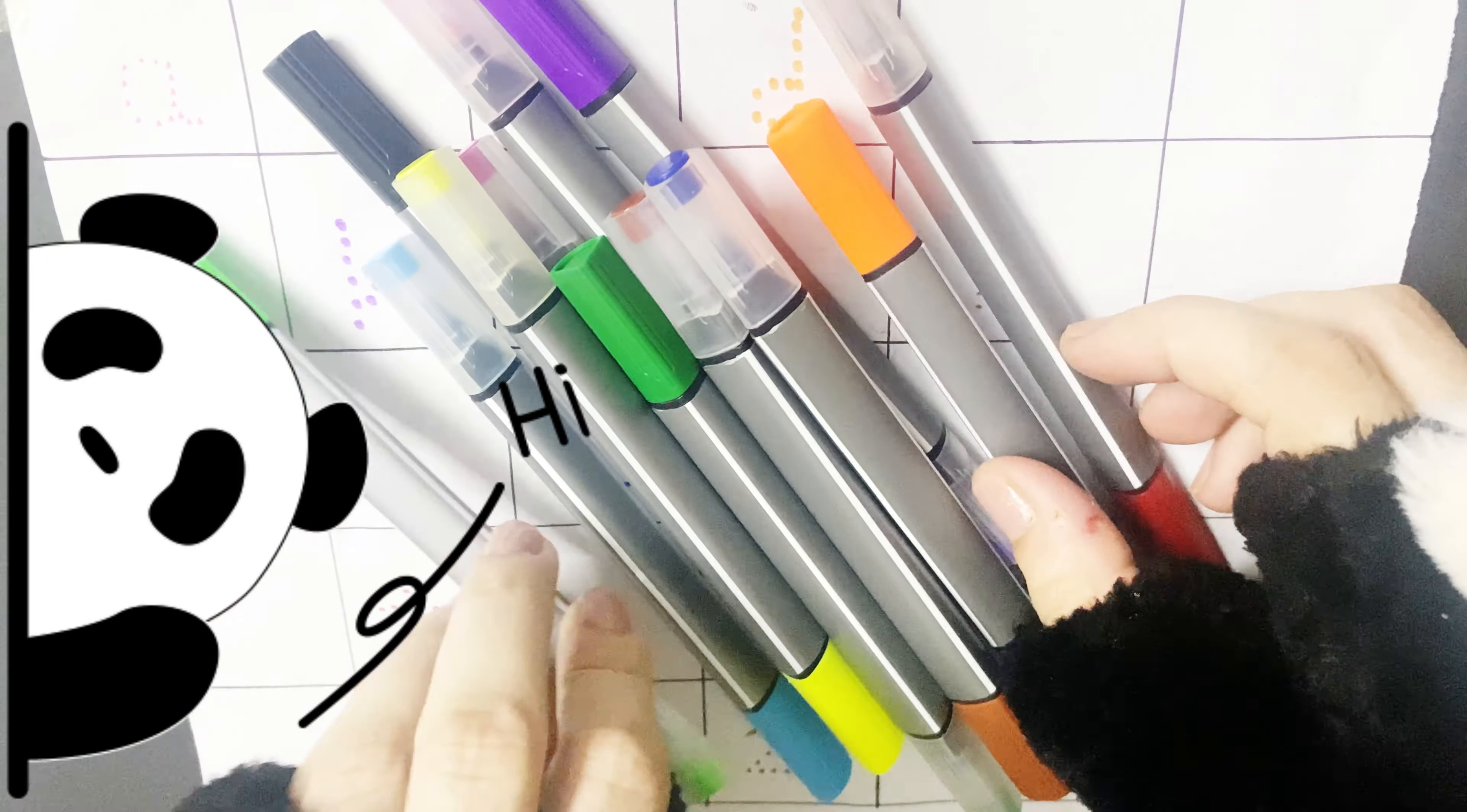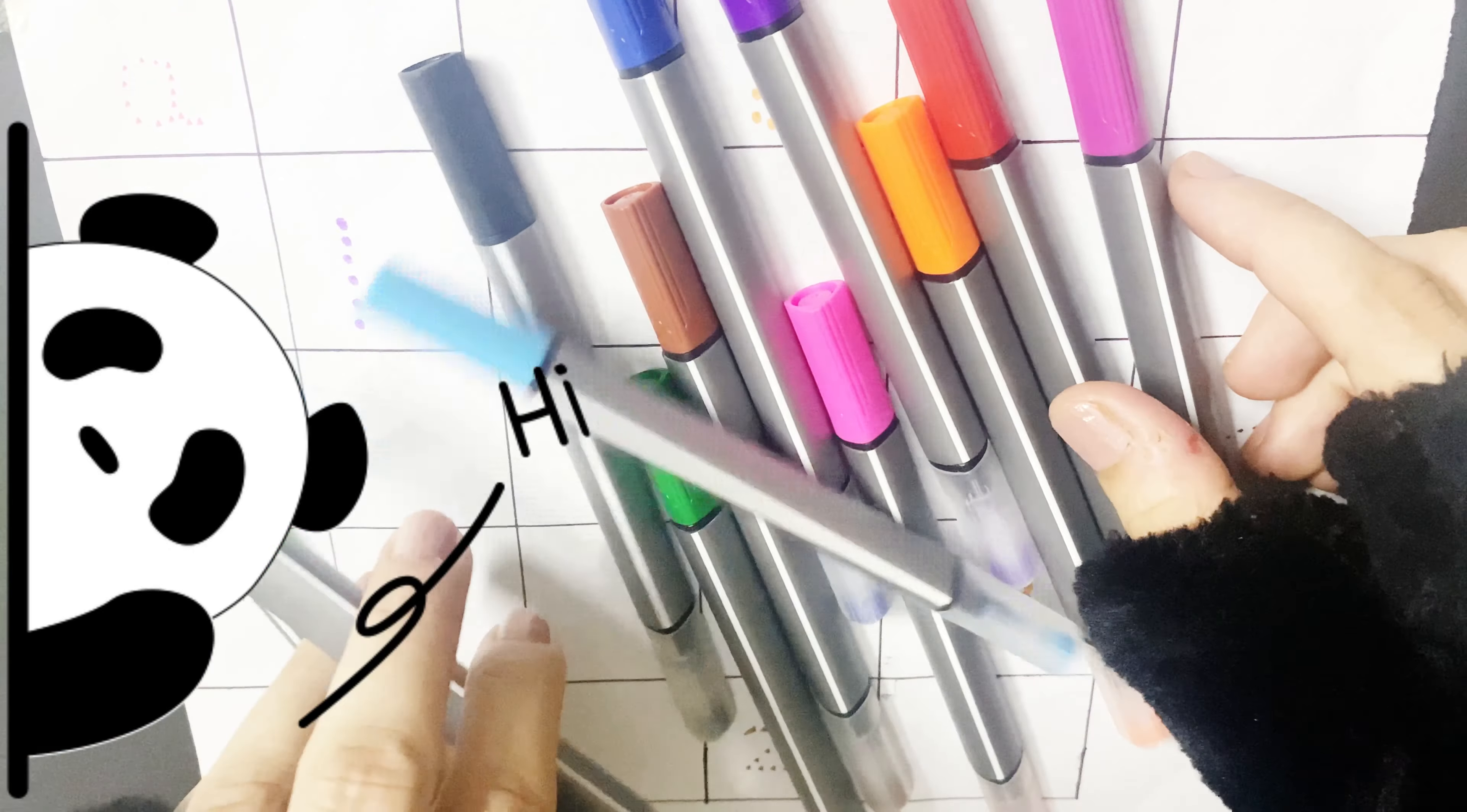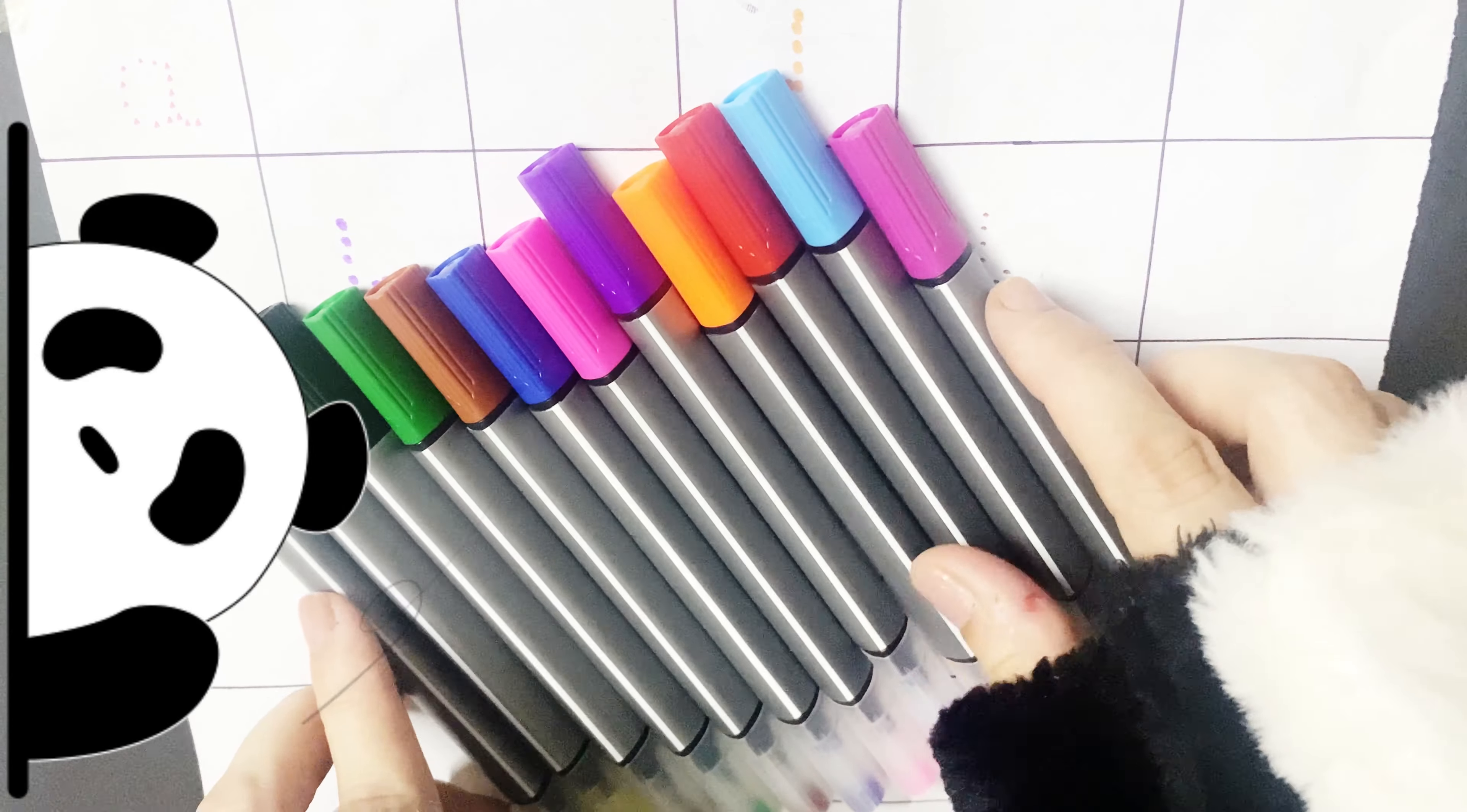Old MacDonald had a farm, E-I-E-I-O. And on his farm he had some ducks, E-I-E-I-O. With a quack quack here and a quack quack there, here quack, there quack, everywhere quack quack. Old MacDonald had a farm, E-I-E-I-O. Wow!